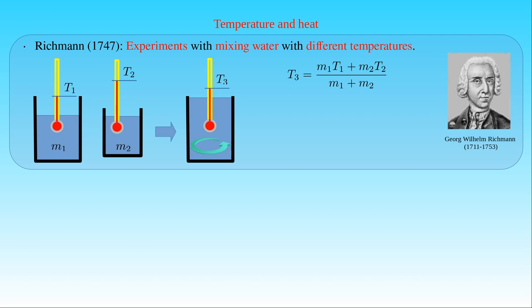If we multiply this equation by M1 plus M2 and reorder the terms, we obtain the equation we have already derived: M1 times (T3 minus T1) equals M2 times (T2 minus T3). We have seen that this relationship can be generalized for mixing different materials with the formula C1 times M1 times (T3 minus T1) equals C2 times M2 times (T2 minus T3), where we take the physical properties of the mixed materials into account by applying the multiplicative factors C1 and C2.